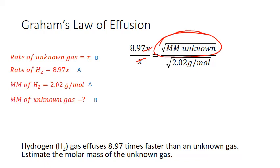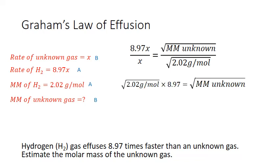So the first step is to actually get 2.02, the square root of that number, out of the denominator. So I can multiply both sides by the square root of 2.02. And I end up with the square root of 2.02 times 8.97 equals the square root of my unknown molar mass.